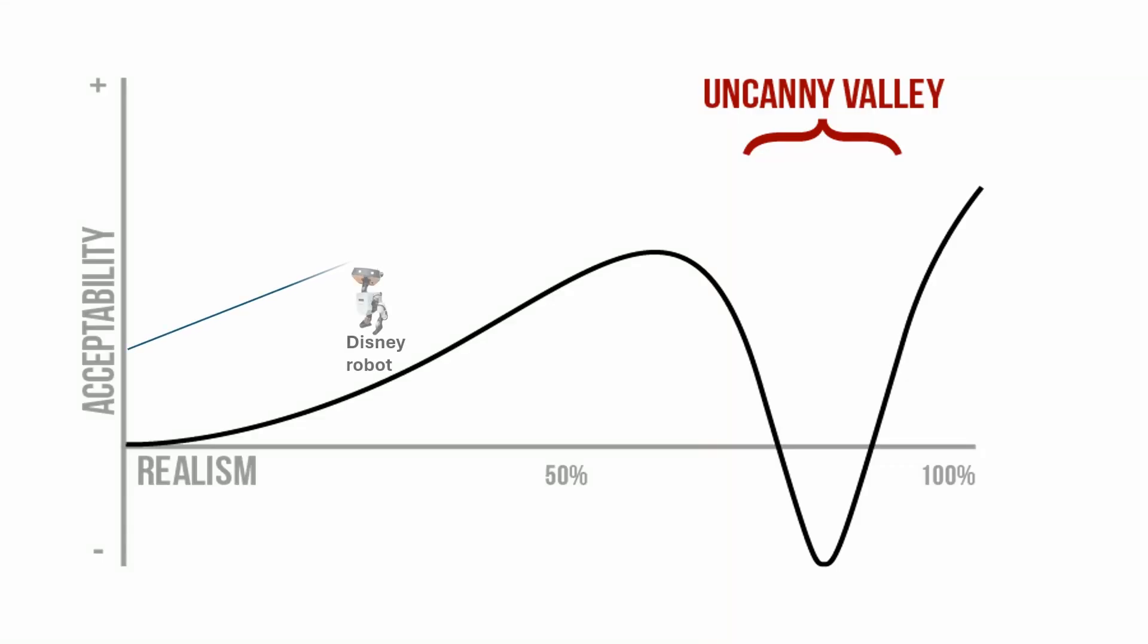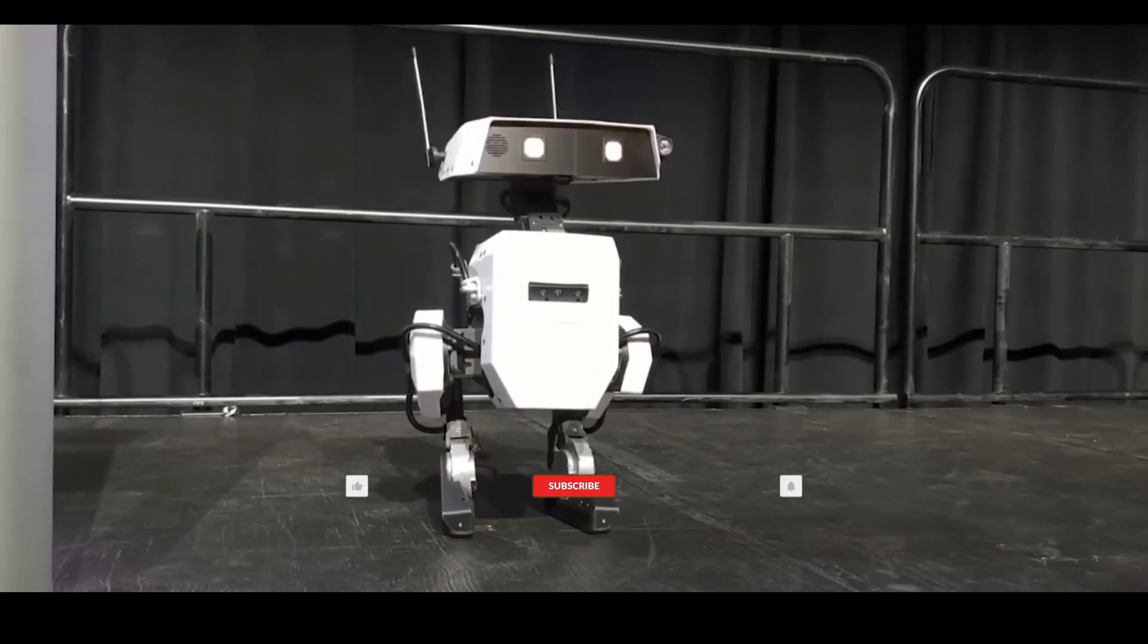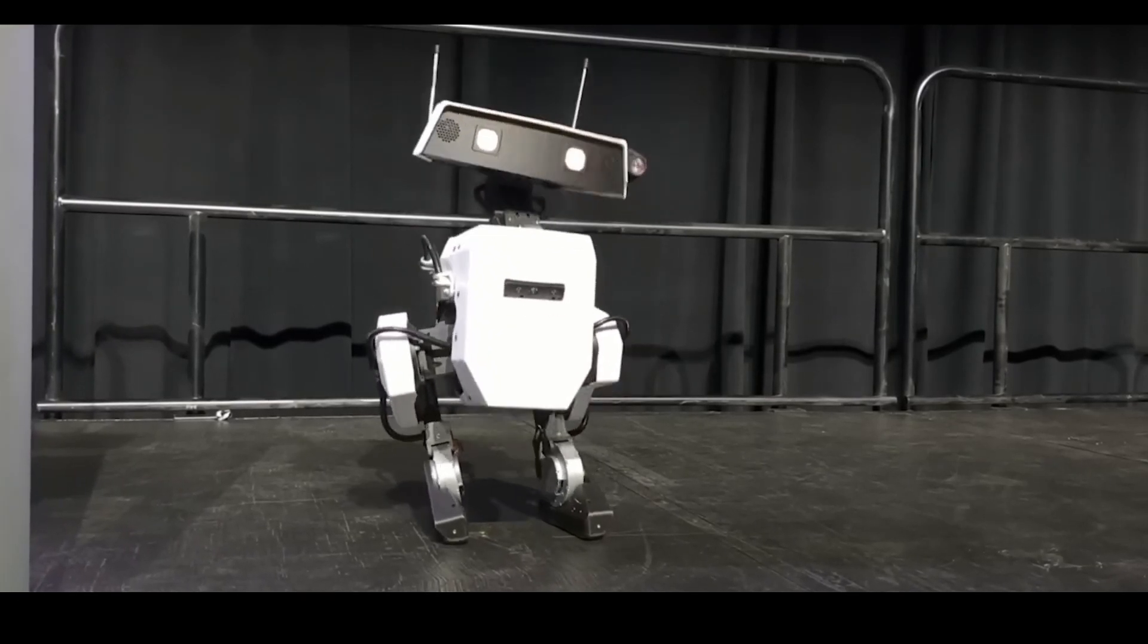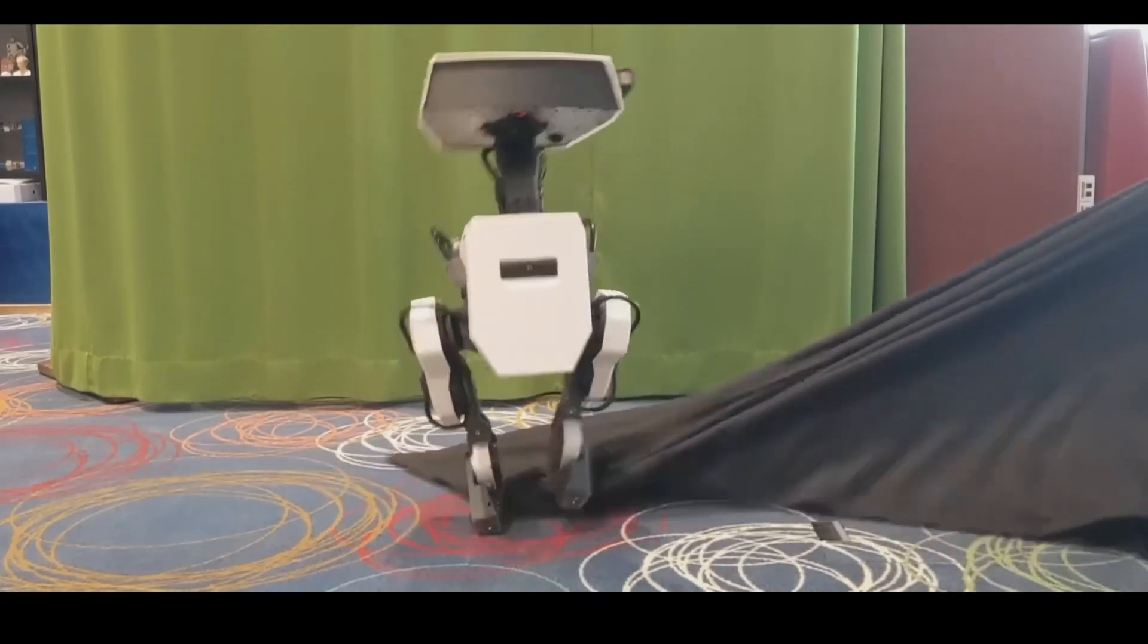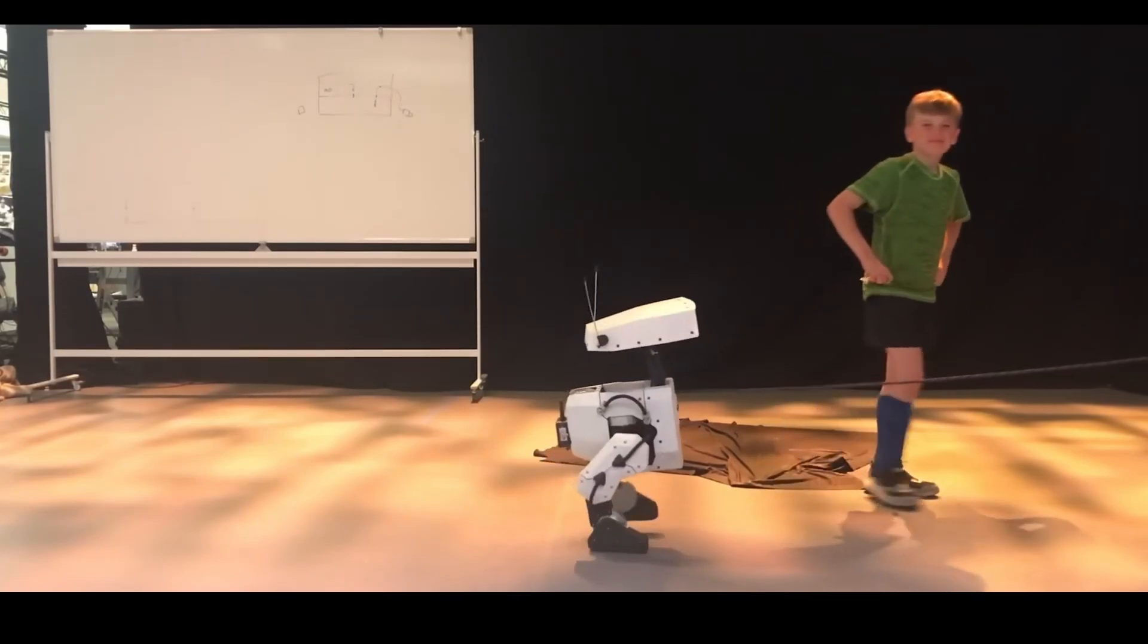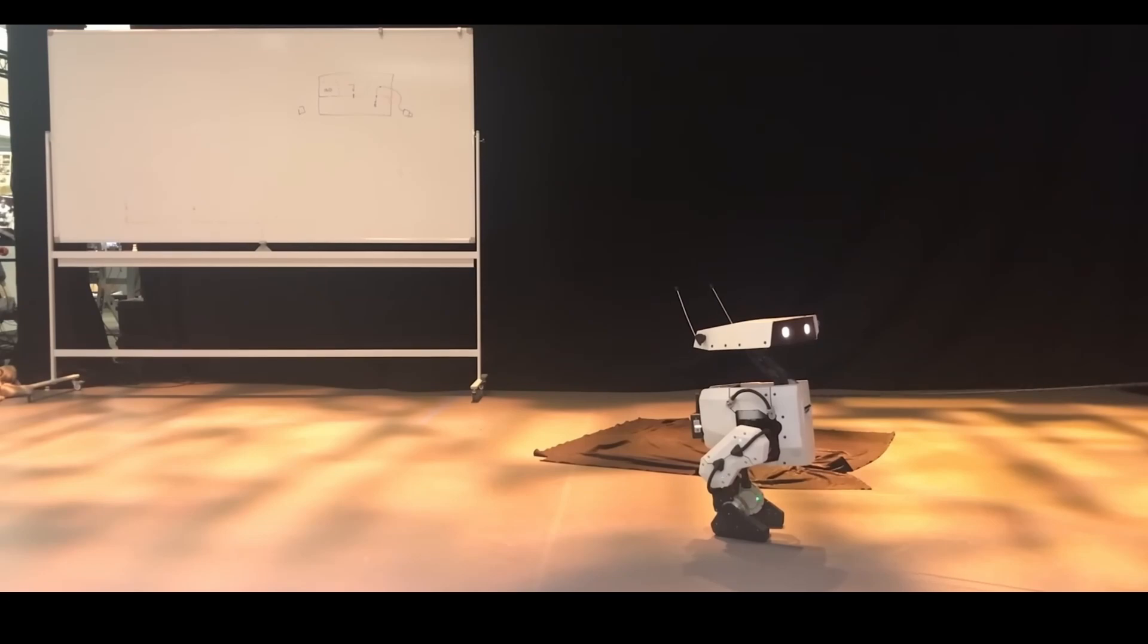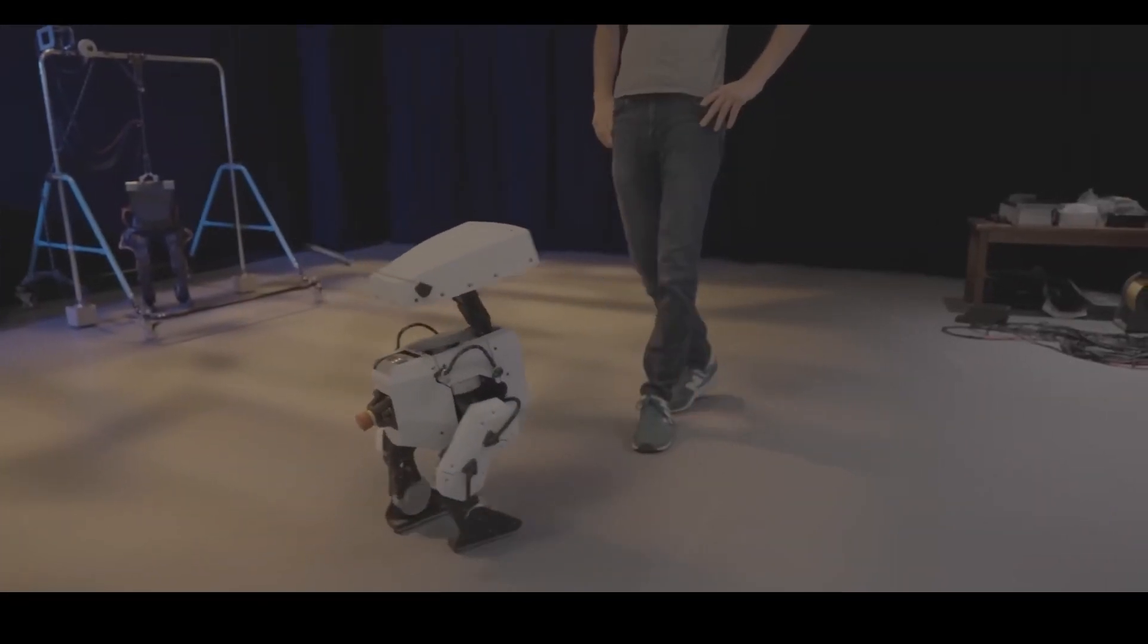In the context of the uncanny valley, Disney's approach to robot design cleverly sidesteps the discomfort typically associated with humanoid robots. Disney's robots are designed to be clearly identifiable as characters rather than attempts to replicate human behavior and appearance precisely. This strategy places them where acceptability is high because they do not aim for hyper-realistic mimicry that can trigger unease.